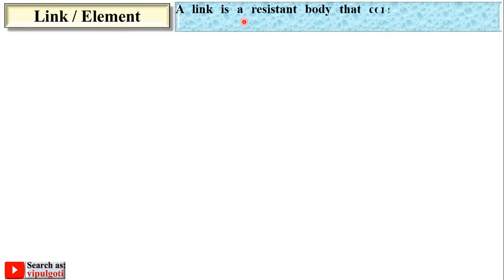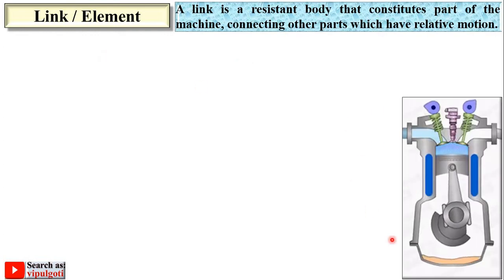The first essential part is link, or sometimes it is called element. A link is a resistant body that constitutes part of the machine, connecting other parts which have relative motion. Here you can see there are many links or elements of the machine, like piston, connecting rod. These are the different links of the machine.